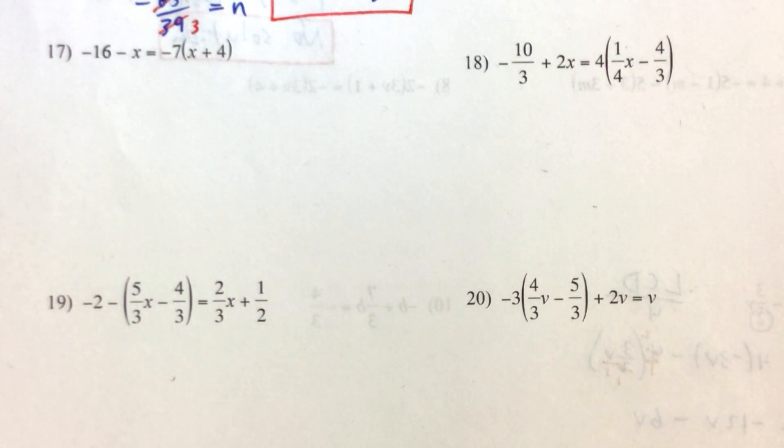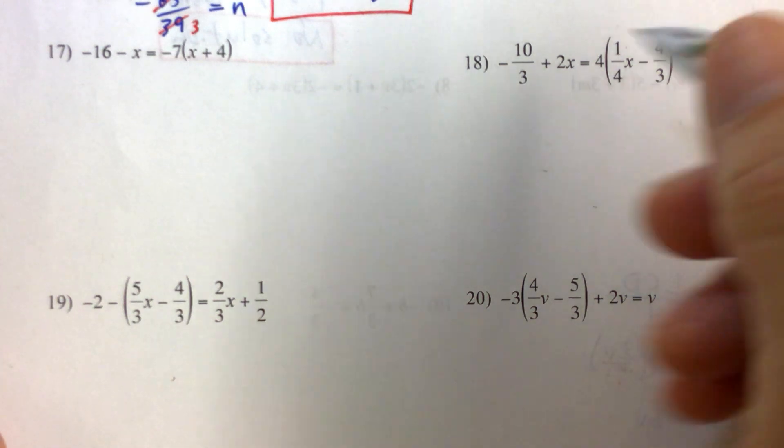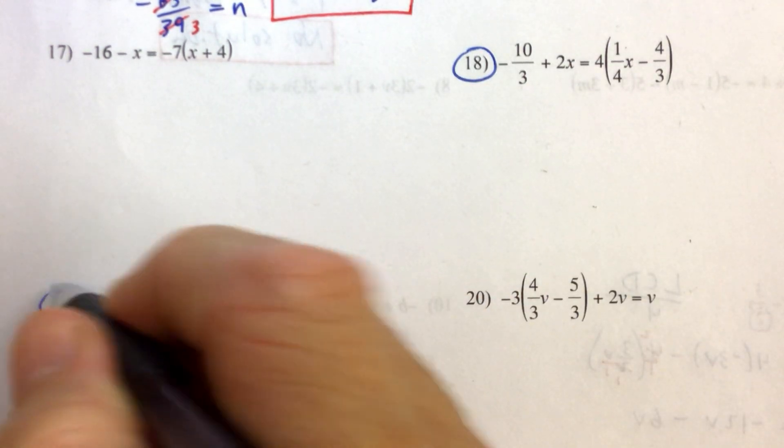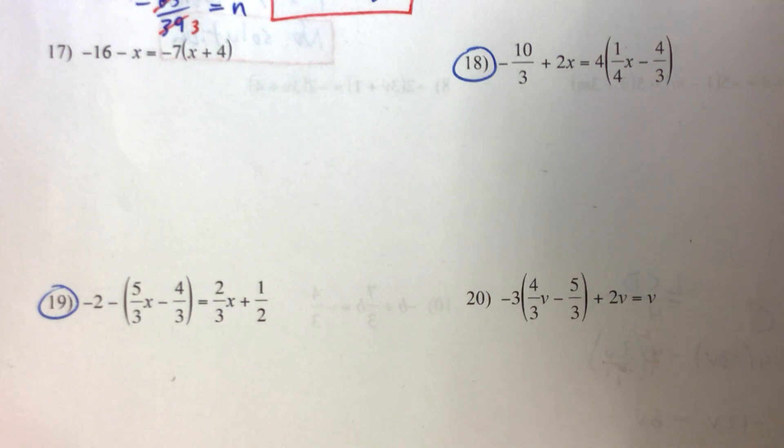So for this last video for the linear equations practice problems, I want to tackle these two problems here. So let's do 18 and 19. For number 18, we have a lowest common denominator again, and that's going to be 12. But let's do this first.